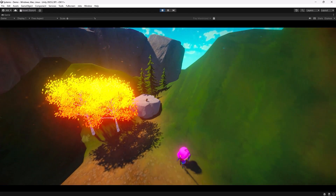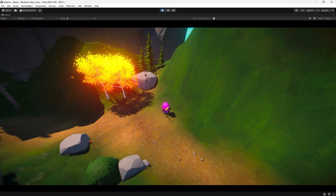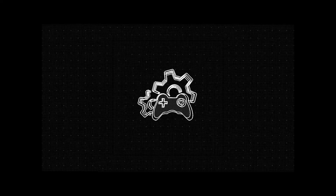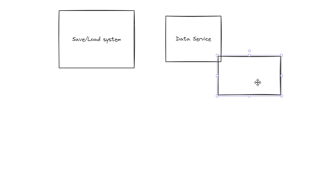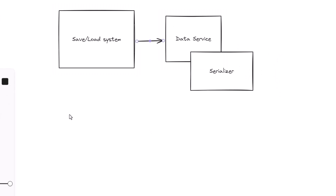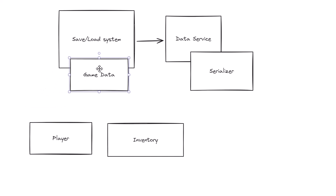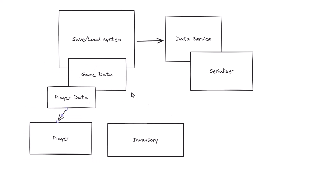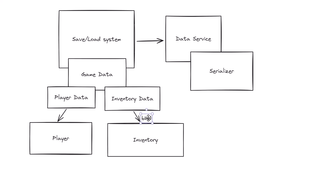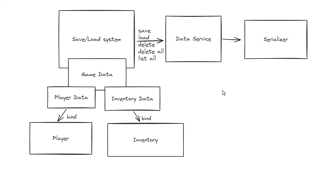We'll build a save load system first, then we'll apply it to a player as well as an inventory system. The hub of our system is the save load system. It has one dependency — the data service — which has its own dependency: a serializer. We already have two things in our game: a player and an inventory. We want a central game data object that contains player data as well as inventory data. We'll bind the player data and inventory data to the player and inventory so that data is always up to date, ready for us to save, load, delete, delete all, etc. Our data service will handle putting it into a file and serializing it.